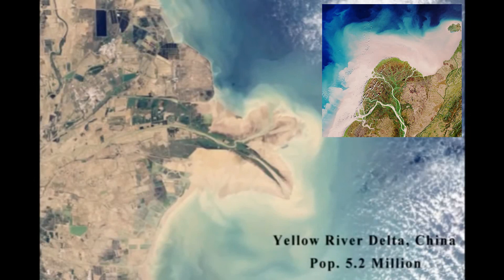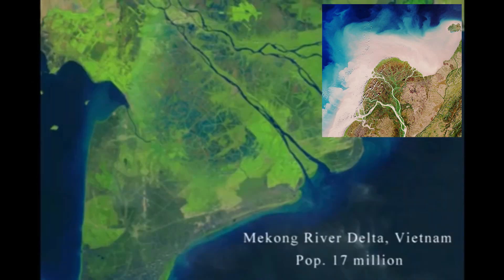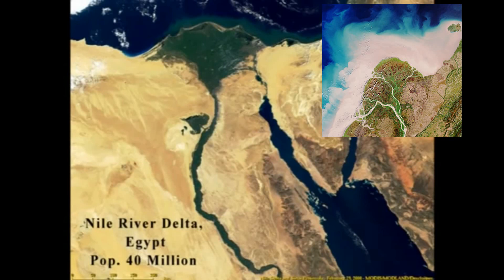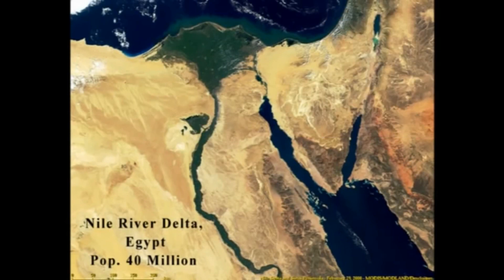A river delta is a landform that forms from deposition of sediment carried by a river as the flow leaves its mouth and enters slower-moving or standing water. This occurs where a river enters an ocean, sea, estuary, lake, or reservoir. Over time, this deposition builds the characteristic geographic pattern of a river delta. The Sundarbans delta of the Ganga River is the largest in the world.